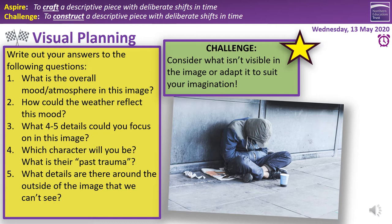For overall mood and atmosphere, there's no right answer, but general ideas would be depression, despondency, isolation, or hopelessness. If you went somewhere different, that's fine so long as your writing makes it clear. For how the weather reflects the mood, I'd go for darkness, clouds, perhaps rain. You could go with sunny, but it would have to be oppressively sunny — like a heatwave. Based on the way he's dressed, I'm imagining it's very cold, and that could represent through pathetic fallacy the cold-hearted nature of the people around him.